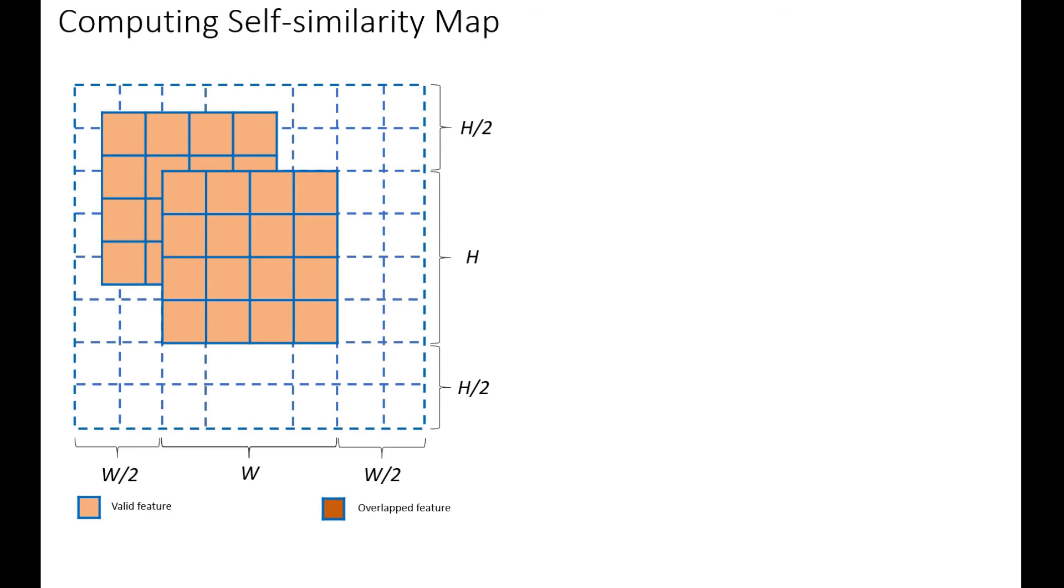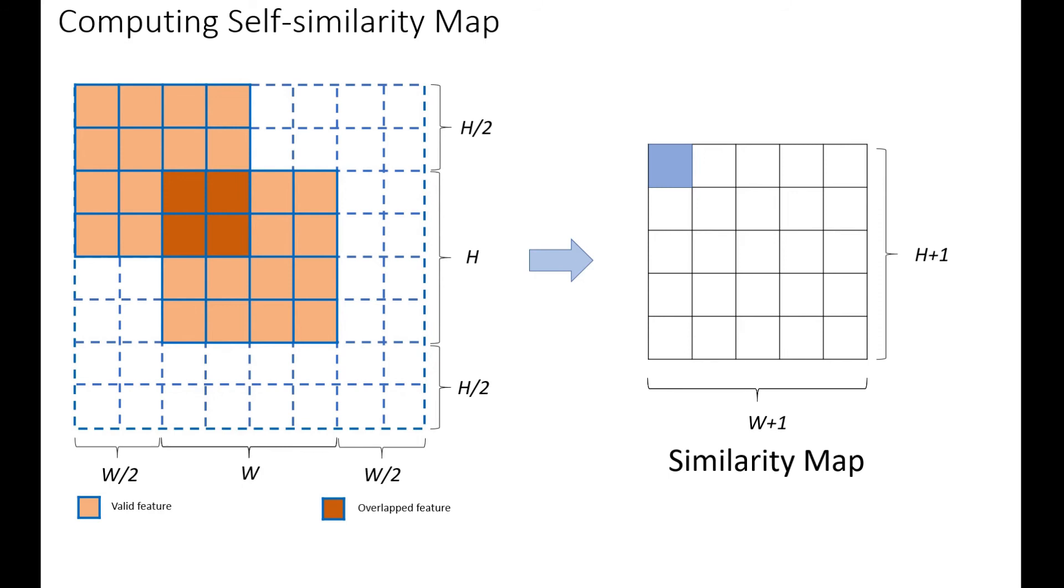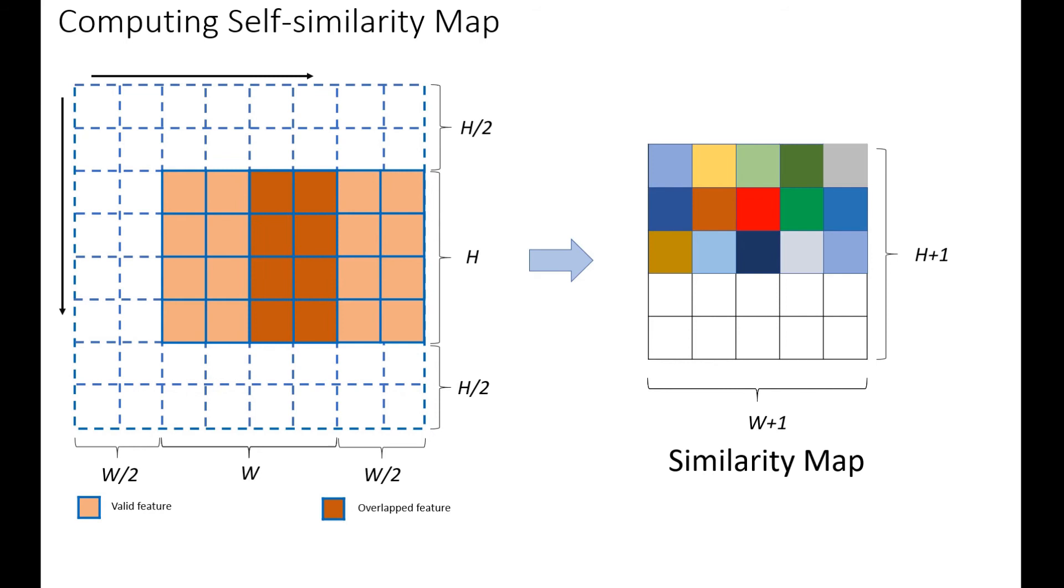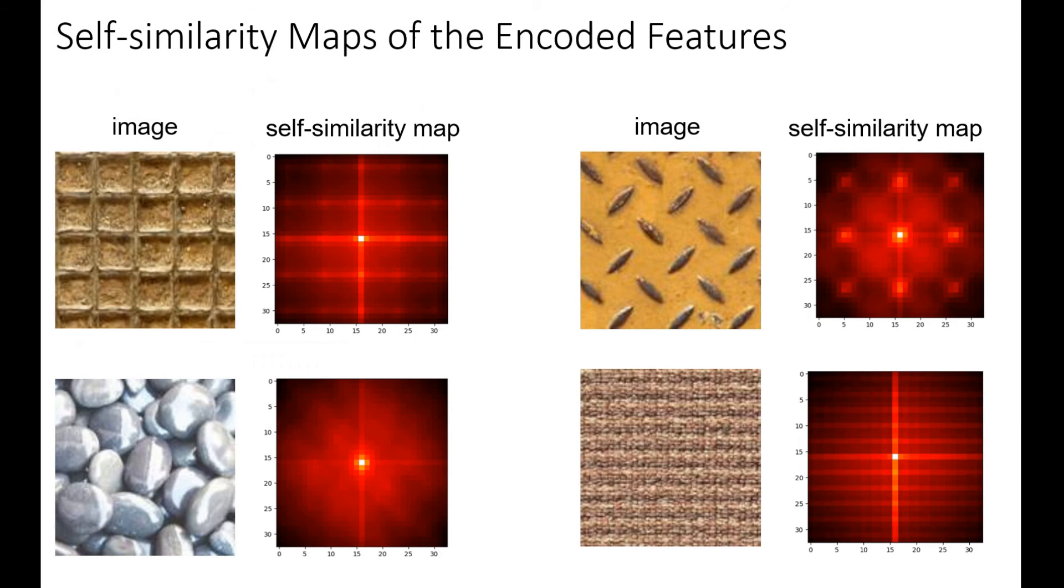The self-similarity map is computed by shifting the encoded feature into different locations. Given an encoded feature map, we will shift it to different locations. The shifted copy and the original copy will have an overlapping region, and the overlapping region will be used to compute the similarity score. We repeat this process for different shifting locations to generate a similarity map. We found that self-similarity maps can capture the structure information of the input texture very well.